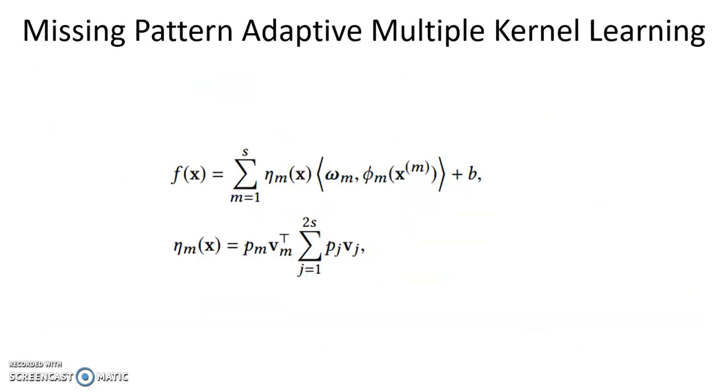In order to allow adaptive kernel combination, we firstly give the decision function f(x) for a sample x with s-channels into this form. p is the binary vector generated by one-hot encoding on the missing pattern for a sample x. We introduce v with latent dimension k to represent embedding matches for missing patterns. By doing so, the absence of a channel makes its kernel weight 0 and influences the kernel weight of other presented channels.